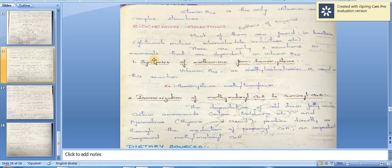They are synthesis of methionine from homocysteine and isomerization of methylmalonyl-CoA to succinyl-CoA. In the synthesis of methionine from homocysteine, vitamin B12 as methylcobalamin is used in this reaction. This is an important reaction involving N5-methyltetrahydrofolate, from which tetrahydrofolate is liberated. This metabolic step signifies the interrelation between vitamin B12 and folic acid, for example, the homocysteine methyltransferase enzyme.